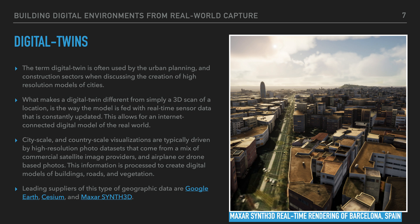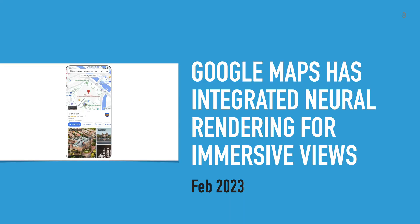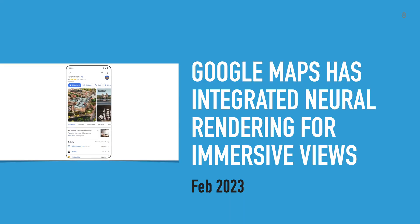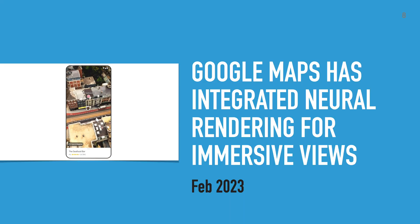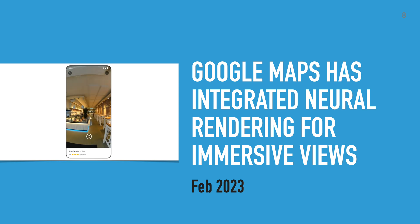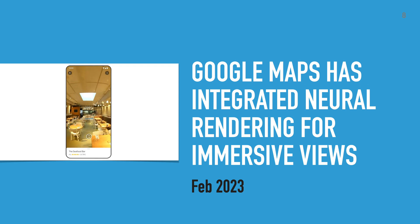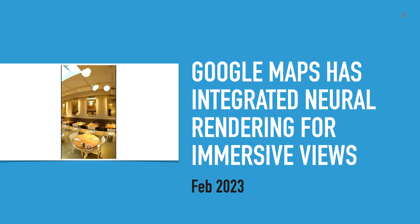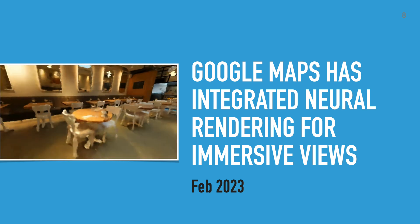This information is processed to create digital models of buildings, roads, and vegetation. Leading suppliers of this type of geographic data are Google Earth, Cesium, and Maxar Synth 3D. Google Maps has integrated neural rendering for immersive views. This makes neural radiance field technology something that billions of people will experience in an effortless fashion as we navigate our daily lives.